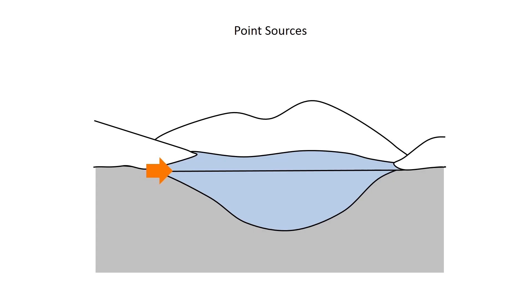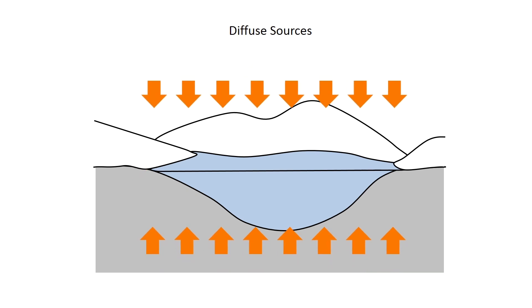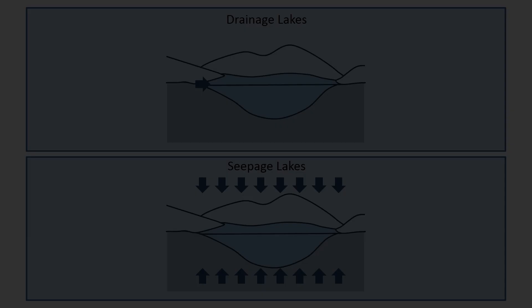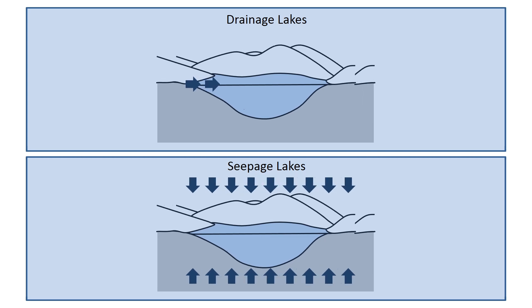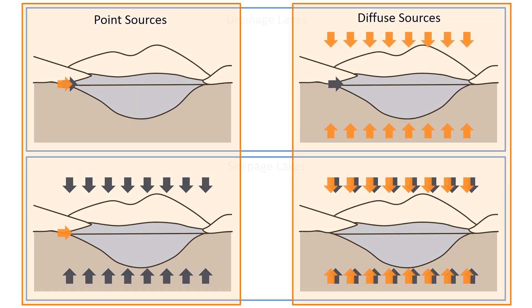Nutrients can enter lakes from either point sources or diffuse sources. So, with two types of lakes and two forms of nutrient input, there are four possible cases.